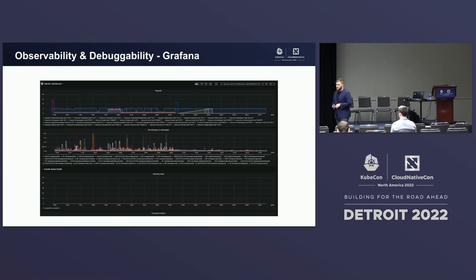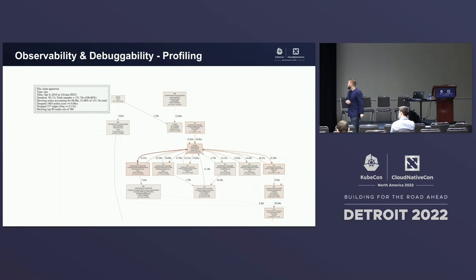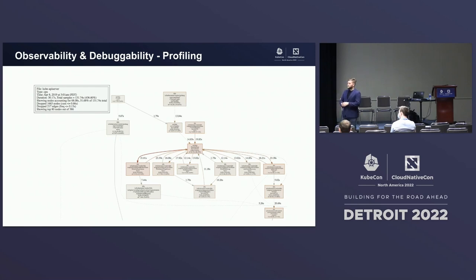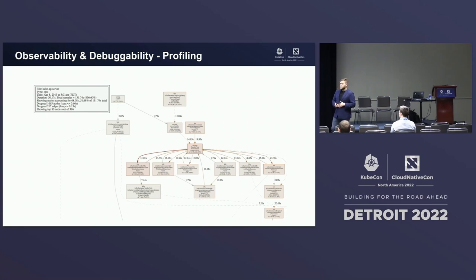If you want to investigate a particular run of a scalability test, you can use our Grafana dashboards — they are super useful for debugging scalability issues. When running Cluster Loader 2, you also get memory and CPU profiling out of the box. So, for example, during a load test, if you see the control plane CPU burning heavily, you can grab the profiling data and see exactly which parts of the Kubernetes control plane were consuming the CPU.